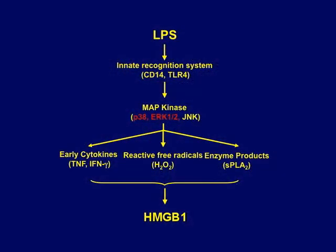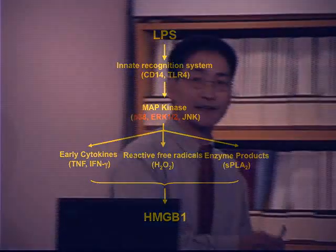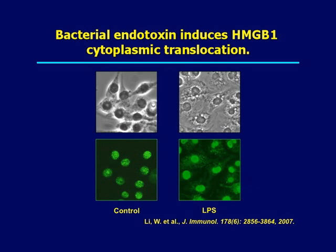However, in response to many inflammatory stimuli — such as bacterial products like LPS, early cytokines such as TNF or interferon gamma, or other stimuli such as oxidative stress like hydrogen peroxide — HMGB1 can be released from macrophages. Normally HMGB1 resides in the nucleus of quiescent cells, but once cells are challenged with bacterial stimuli such as lipopolysaccharide, HMGB1 can translocate from the nucleus to the cytoplasm and eventually be released into the extracellular space.